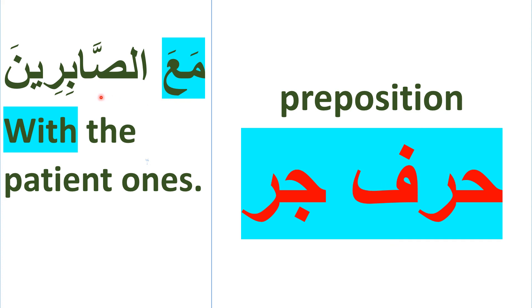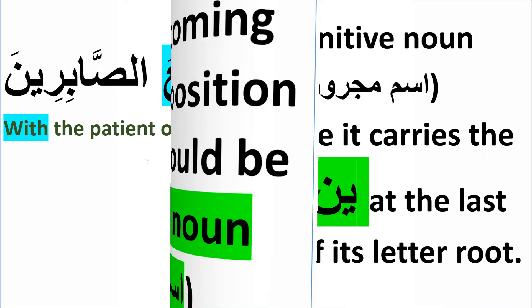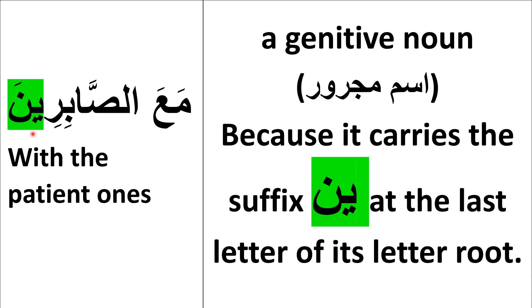مَعَ الصَّابِرِين means 'With the patient ones.' مَعَ, meaning 'with,' is a harf jar or preposition. الصَّابِرِين is an isma jroor, a genitive noun, because it follows the preposition مَعَ.